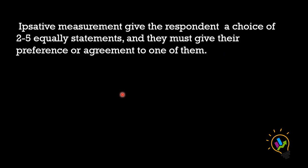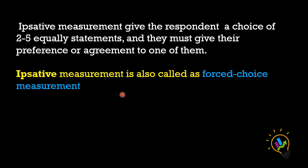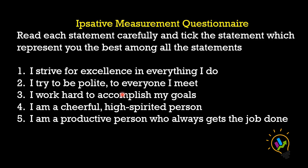In ipsative measurement, the respondent is given a choice of two to five equal statements and must give their preference or agreement to one of them. Ipsative measurement is also called forced choice measurement. It is called forced choice because among the five statements only one can be selected.